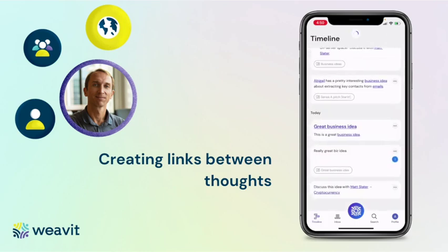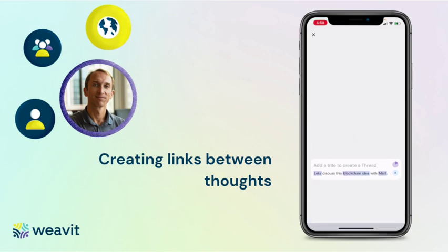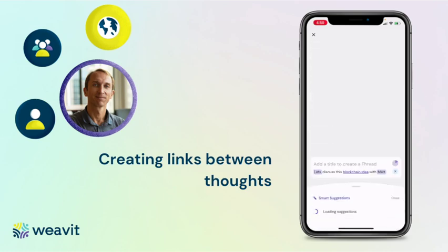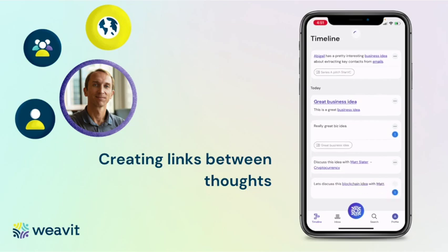The last way, which is a bit the magic way, is to just let Wivit guess. I could say 'let's discuss this blockchain idea with Matt,' and let's see if it guesses the topics. It finds blockchain idea, and Matt becomes Matt Slater. Now we have this thought linked to blockchain and Matt.